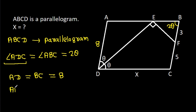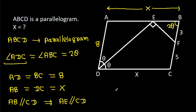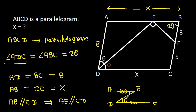Also, AB is equal to DC, and DC is X, so AB will also be X. And AB is parallel to CD, which means AE is parallel to CD. So these two angles will be equal. This angle is theta, so this angle will also be theta.